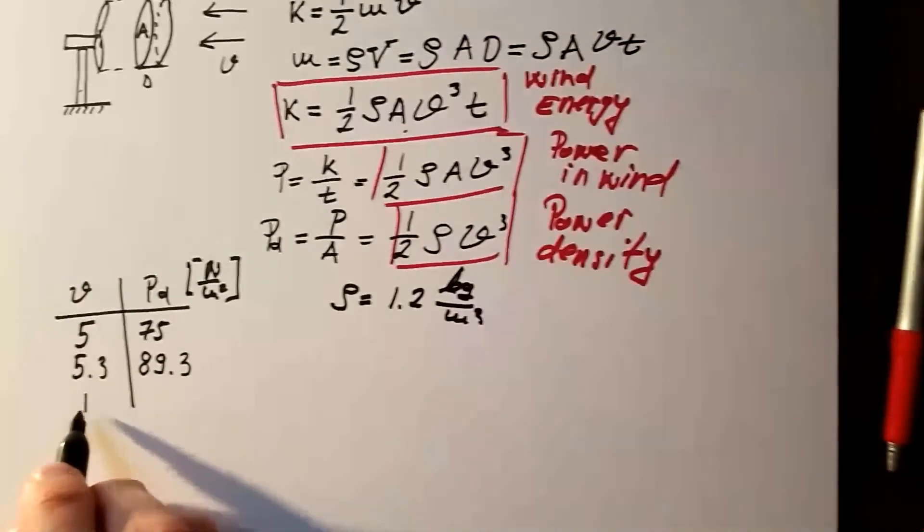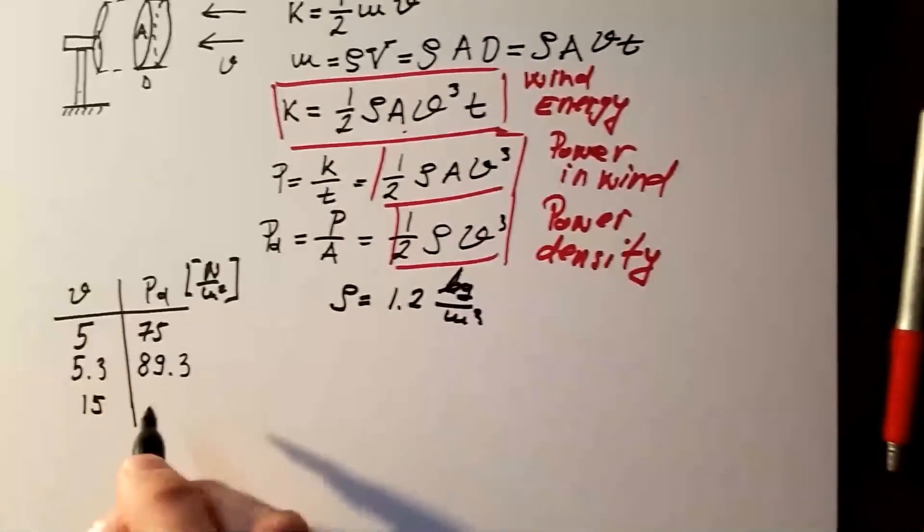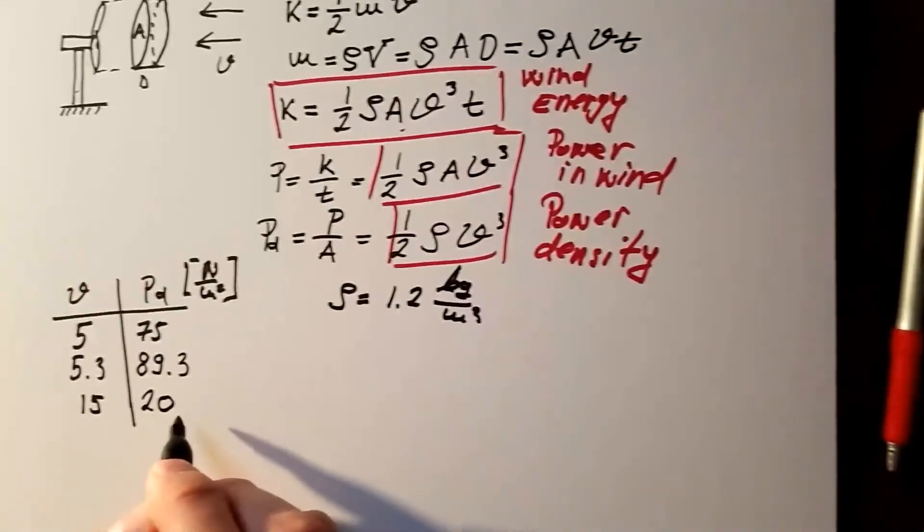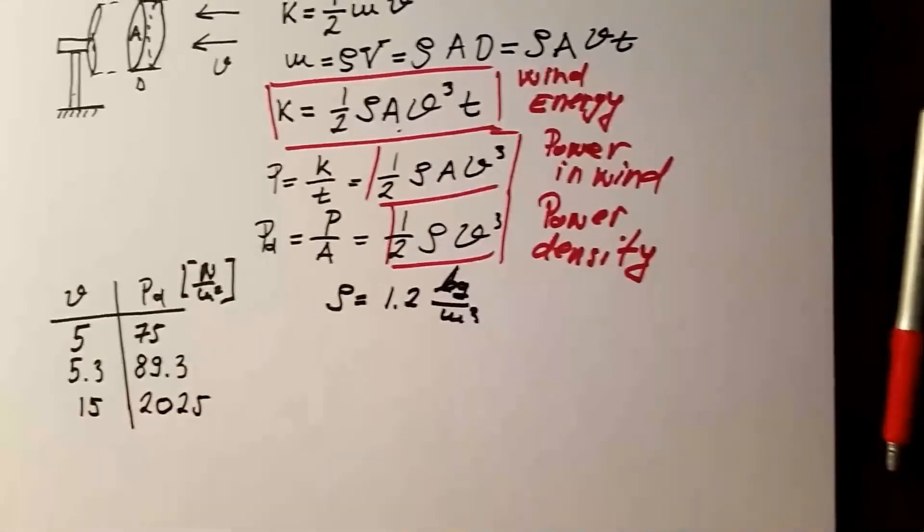And just to demonstrate this even further, let's take 15 meters per second. Wind speed will give us power density that is 2,025 Watt per square meter.